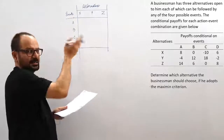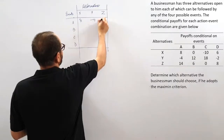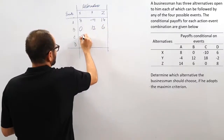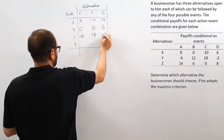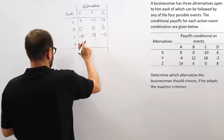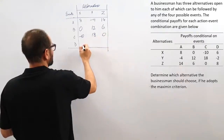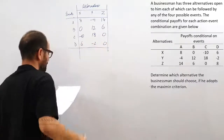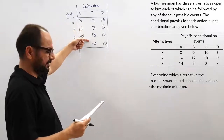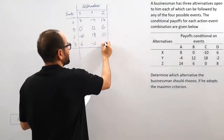After transposing, we have x, y, z as alternatives and a, b, c, d as events. The payoffs are: for x — 8, 0, minus 10, 6; for y — minus 4, 12, 18, minus 2; for z — 14, 6, 0, 8. Let us verify: 8, 0, minus 10, 6; minus 4, 12, 18, minus 2; 14, 6, 0, 8. That checks out.